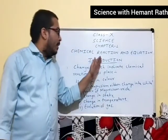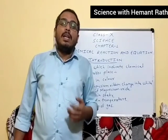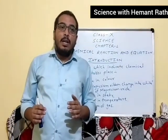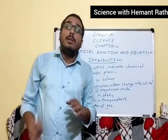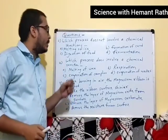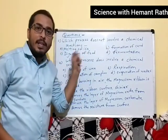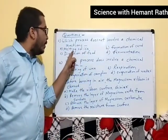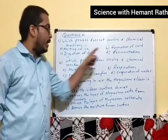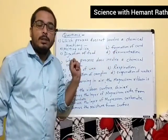This is our introduction of the first chapter: Chemical Reaction and Equation. Now we will see some questions. Our first question is: which process does not involve a chemical reaction? Option A: melting of ice. Option B: formation of curd. Option C: digestion of food. Option D: fermentation.